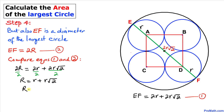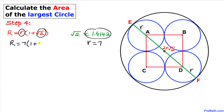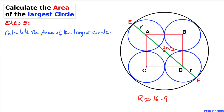Factoring out lowercase r: uppercase R = r(1 + √2). We know that √2 ≈ 1.4142, and the small radius r = 7. Substituting: R = 7 × (1 + 1.4142) = 7 × 2.4142. Therefore uppercase R turns out to be approximately 16.9.